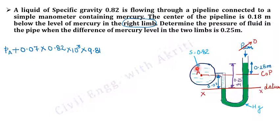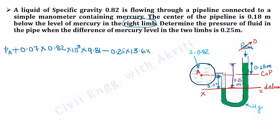Now reaching this point, I jump to the other limb and need to go upward. Going upward uses a minus sign. The fluid here is mercury, so specific gravity is 13.6, into density of water 10³ into 9.81, which equals zero because above the right limb we have atmospheric pressure.